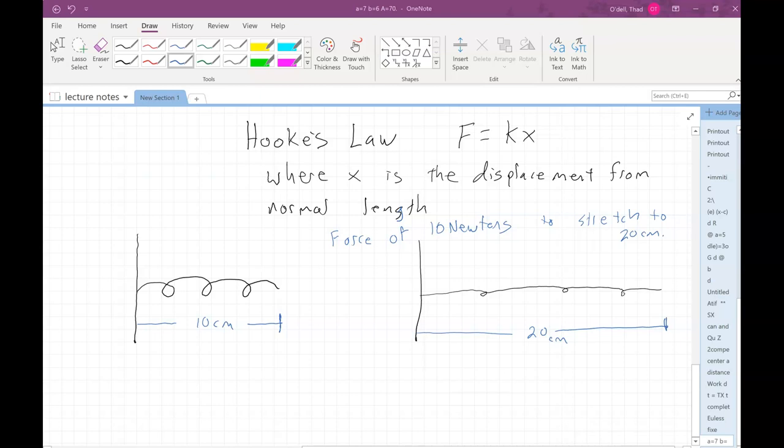So basically, the force it takes to compress or stretch a spring is proportional to how much you've stretched it. Here's the formula: F equals some constant K times X, where X is the displacement from normal length. So let's say that this is normal - my spring, when it's just sitting there, it's normally 10 centimeters long.